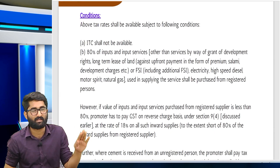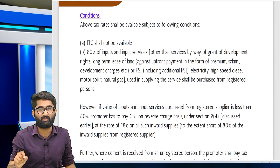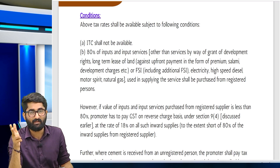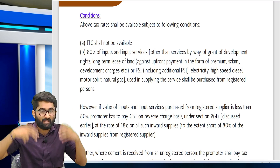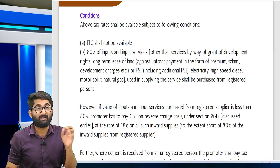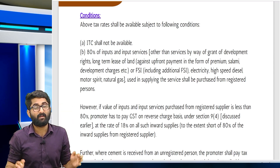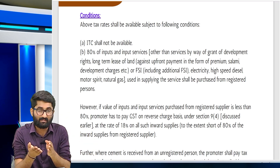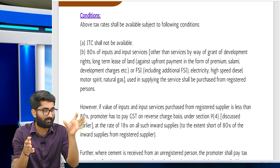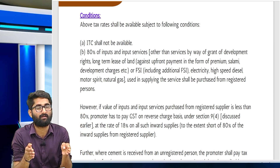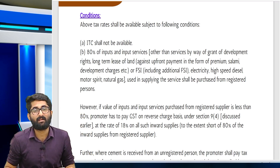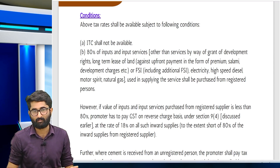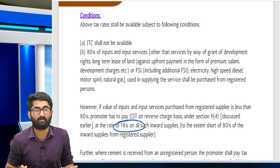For application of 1% and 5% rates, the conditions are: ITC is not available, and 80% of the inputs — except inputs by way of grant of development rights, long-term lease, and FSI — must be purchased from registered persons. If purchases from registered persons are less than 80% of total, the difference is taxable under RCM at 18%.